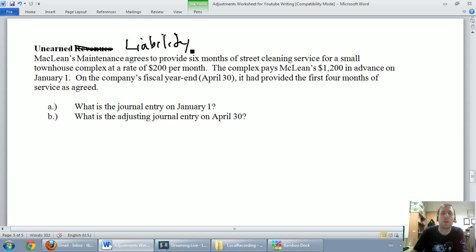Okay, so on January 1st, the complex pays McLean's $1,200 on January 1st. So we're McLean's, on January 1st we're getting paid. So anytime you're getting paid you're getting cash. Cash is an asset, it's an asset going up, we're going to debit cash. So let's debit our cash. January 1st. We're going to debit cash and they paid us $1,200. They paid us six months in advance. So we're going to debit cash for $1,200 and that of course goes under the debits.